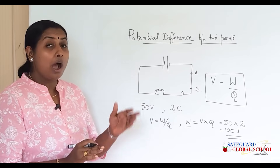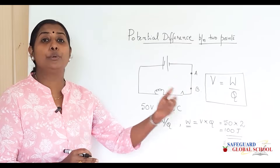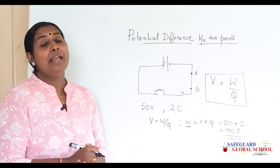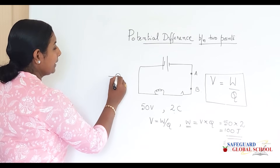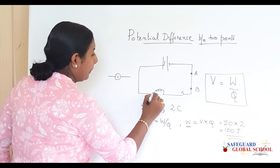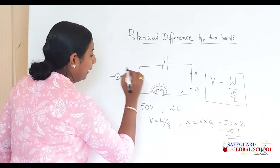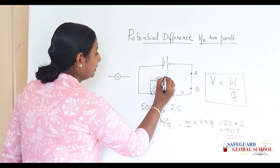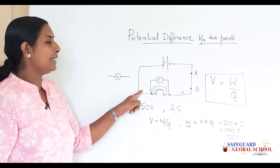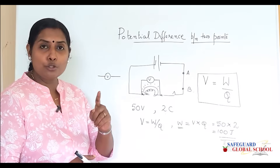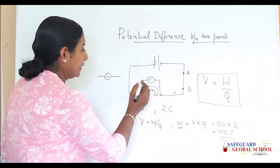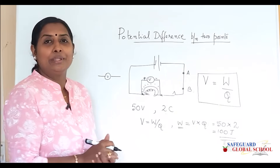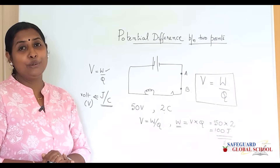Now we will discuss how to measure potential difference in a circuit. The instrument which helps us measure potential difference is called a voltmeter. If there is a bulb and we want to measure the potential difference between its two ends, we connect the voltmeter in parallel. Please note that the positive side of the voltmeter should be connected at the same side as the battery's positive terminal when doing experiments in the practical lab.